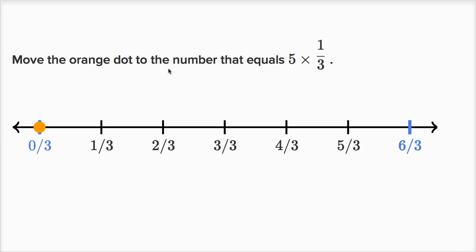We're asked to move the orange dot to the number that equals five times one-third. So one way to think about it, we just have to move one-third five times.